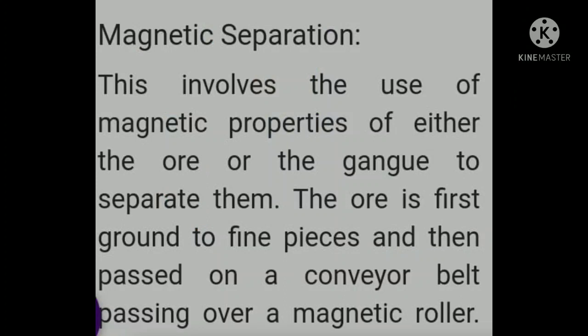The next method is magnetic separation. The principle behind this method is that, out of the ore and gangue, one should possess a magnetic property and the other should not. The method is based on the difference in magnetic properties between the ore and the gangue.